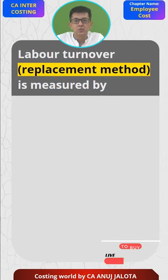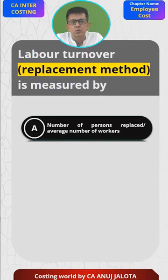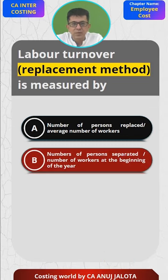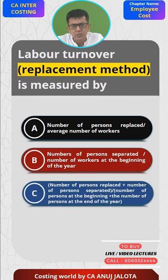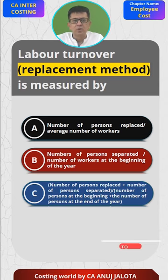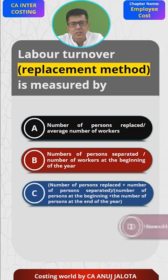Let's start. Today's MCQ: Labor turnover replacement method is measured by — here are the four options. Option A: number of persons replaced divided by average number of workers. Option B: number of workers separated divided by number of workers at the beginning of the year. Option C: number of persons replaced plus number of workers separated divided by number of workers at the beginning plus number of workers at the end of the year.